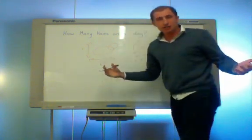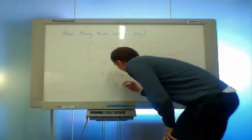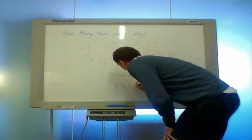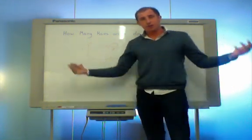Therefore, my answer is, there are 8 billion hairs on the average dog.